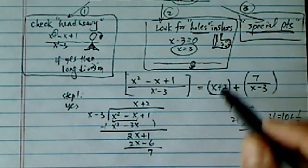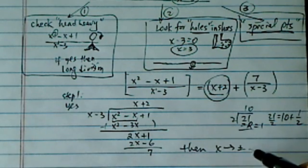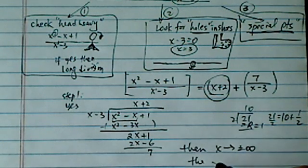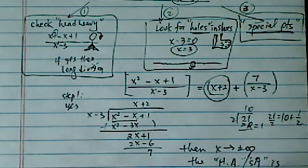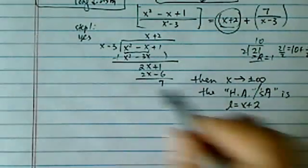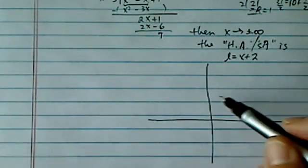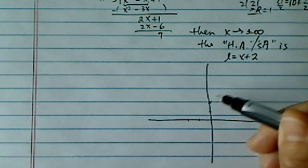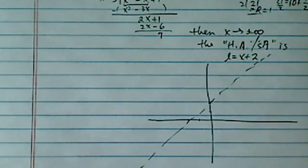Here's the quotient and here's the remainder. Once we have this one, then we conclude when x gets to be positive or negative infinity, the horizontal asymptote, even though in our case it's more of a slanted asymptote, is x plus two. I'm starting to graph it, so here's my slanted line. Step one gives you a horizontal or slanted asymptote.